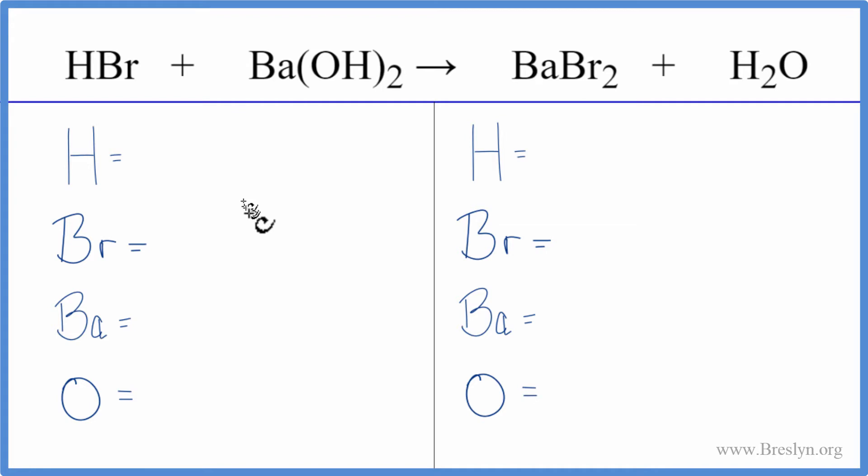We'll count the atoms up first on the reactant side. We have the one hydrogen here, but be careful because we have hydrogens here as well. We have one times two, so that gives us two more. So now we have three hydrogen atoms. We have one bromine, one barium, and this two applies to everything in the parentheses. So two times one, that gives us two oxygen atoms.